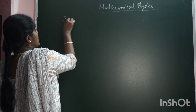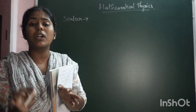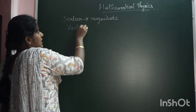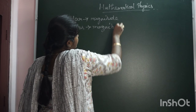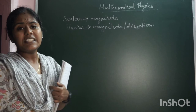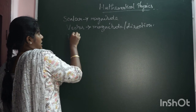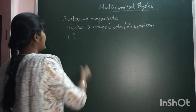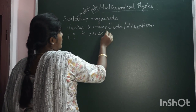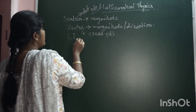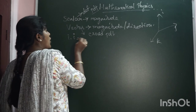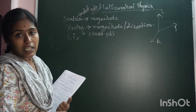Scalar is that which defines only the magnitude. Vector is that which defines both magnitude and direction. So scalar product means dot product, and vector product means cross product. For unit vectors I, J, K: the dot product of two same vectors will be equal to 1.